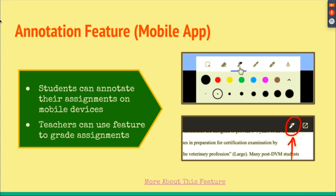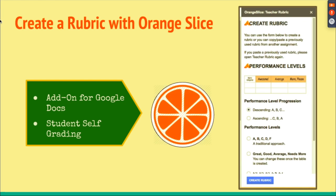If you have the mobile version of Google Classroom — on your iPhone, Android phone, or tablet — you can use the pen features to highlight and write on student assignments. It creates a PDF that you can annotate and draw on. Students will have two copies: the original assignment they turned in and the annotated PDF copy from you.